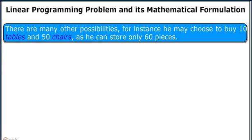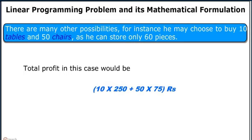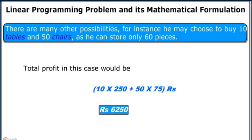There are many other possibilities. For instance, he may choose to buy 10 tables and 50 chairs, as he can store only 60 pieces. The total profit in this case would be 10 × 250 plus 50 × 75, that is Rs 6250.